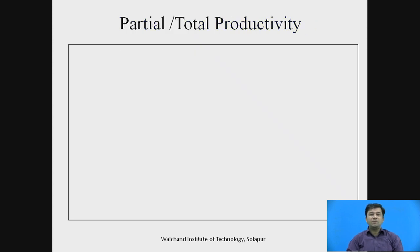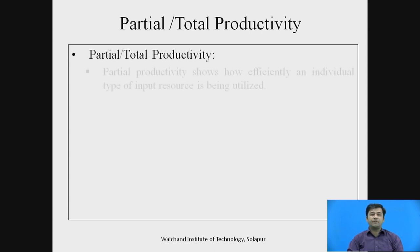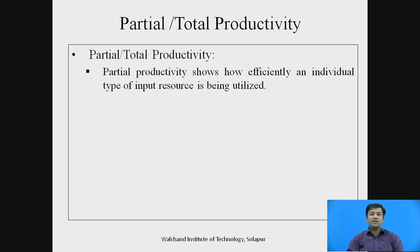Now we come to the topic of partial and total productivity. Partial productivity shows how efficiently an individual type of input resource is being utilized. For example, considering three different types of products with n number of inputs and the same total output, we can assess how much improvement there is in product A relative to overall input — that is partial productivity. Department-level productivity is also an example: how the PPC department, HR department, or materials department is performing.